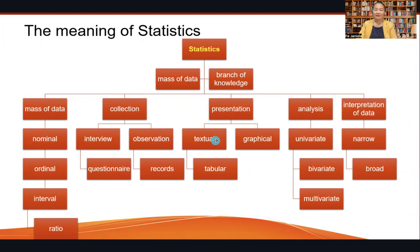Data can be presented in three ways: textual, graphical, and tabular. For analysis, variables can be univariate — one variable, bivariate — two variables, or multivariate. For bivariate analysis, you can get the difference using the t-test and the relationship using correlation. For multivariate, you can use ANOVA.